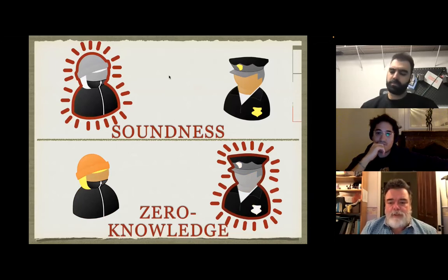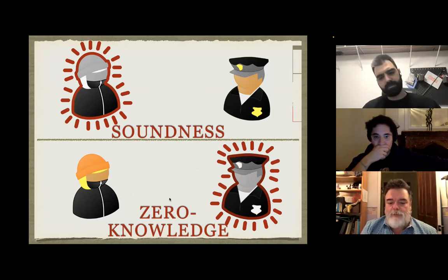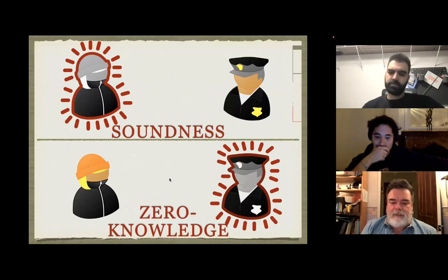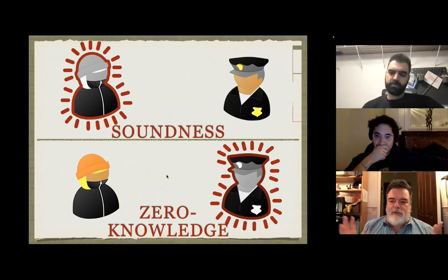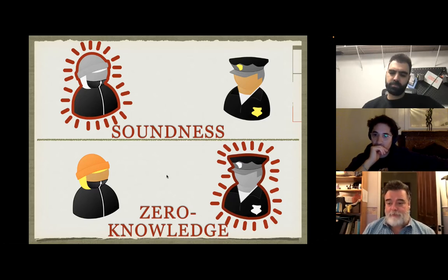Soundness protects the verifier from the dishonest prover, ensuring the prover cannot prove something false to the verifier. The other property we discuss is called zero-knowledge, which on the contrary protects the prover from the verifier. Zero-knowledge essentially means that whatever the verifier sees are things he could have predicted by himself in the first place — he will only see answers he already knew, or at least could have created the same questions and answers with the same distribution without actually knowing a proof that W is in L.